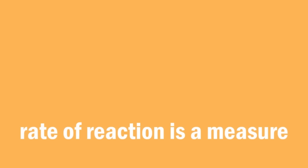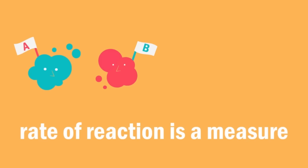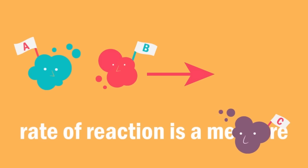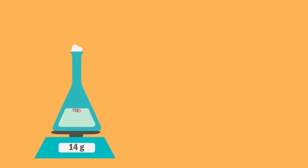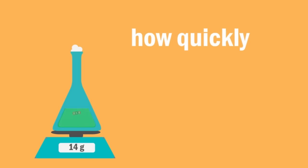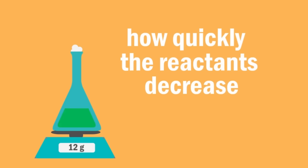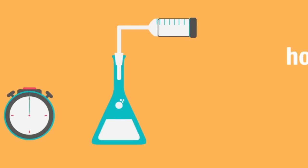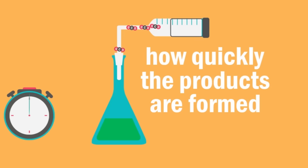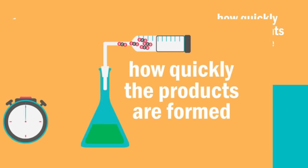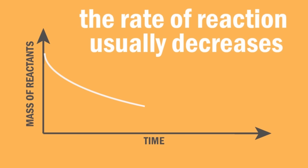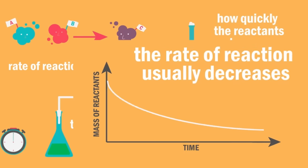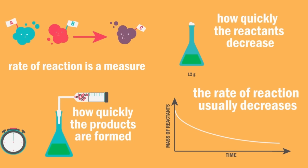So let's recap: the rate of reaction is a measure of how quickly the reactants change into the products. The rate of reaction can be measured by measuring how quickly the reactants decrease or how quickly the products are formed. The rate of reaction usually decreases as the reaction proceeds.